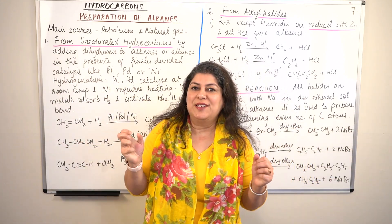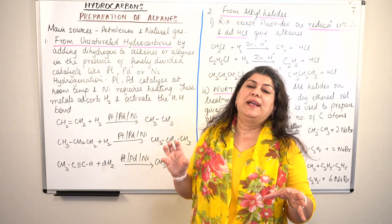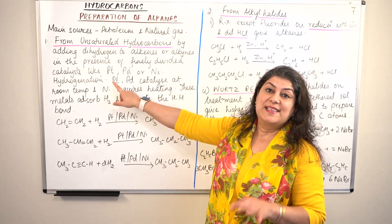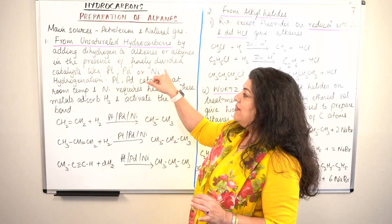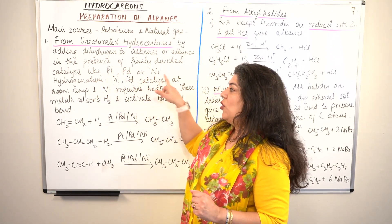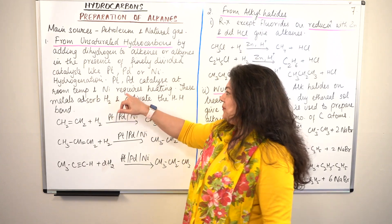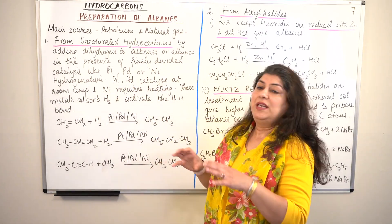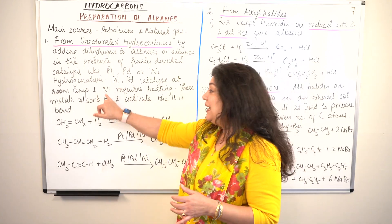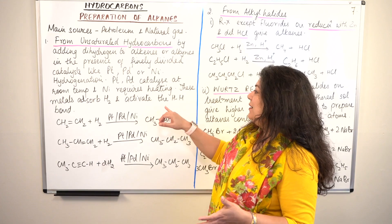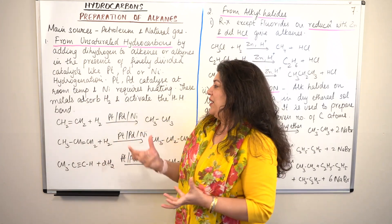Once hydrogen is adsorbed on the surface it gets ready to react with the alkene or alkyne. Platinum, palladium, and nickel do not actually participate in the reaction — therefore they act as catalysts. This process is also known as hydrogenation. Platinum and palladium can catalyze the reaction even at room temperature — they are more efficient. Nickel is not as efficient; if you're using nickel you will have to raise the temperature. Warm nickel will absorb the hydrogen and activate it for reaction.